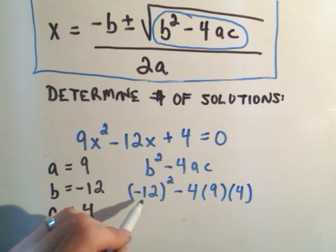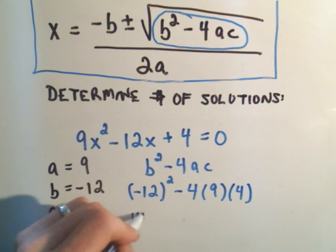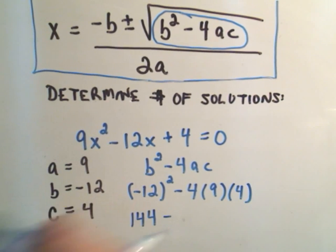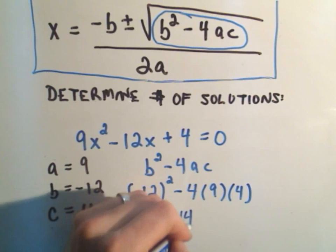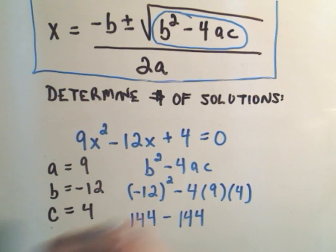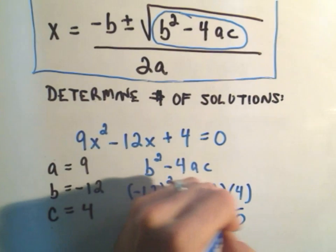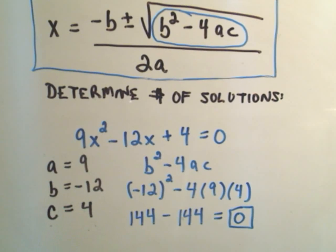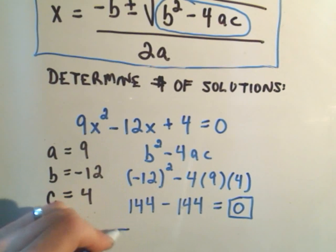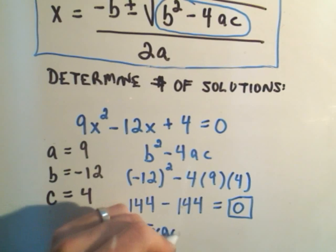Well, negative 12 times negative 12 is positive 144. 4 times 9 is 36. 36 times 4 is actually 144 as well. And this works out to equal 0. And again, we said if the discriminant works out to be 0, that means there is exactly one solution.